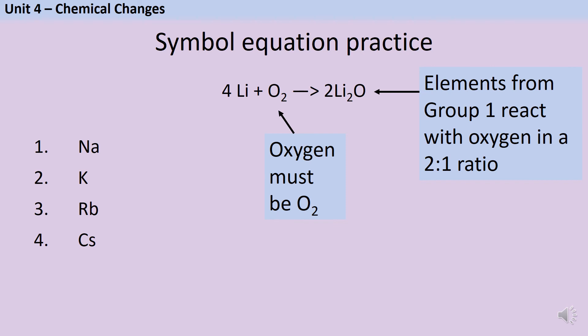Pause the video and use this example to write equations for the remaining four metals. Hopefully you've managed to work out that four sodium atoms react with oxygen to form two moles of sodium oxide, and then likewise for potassium, rubidium and caesium.